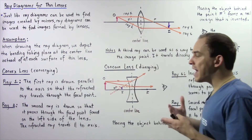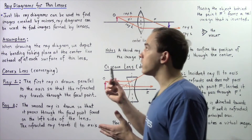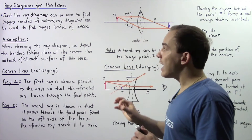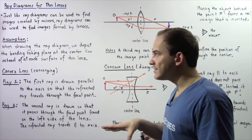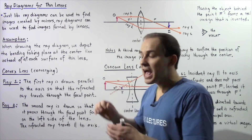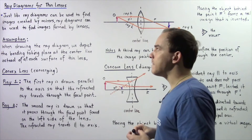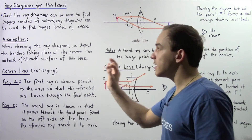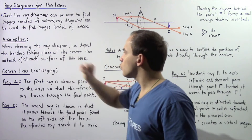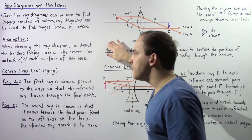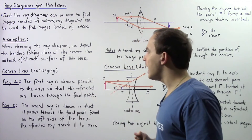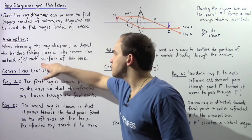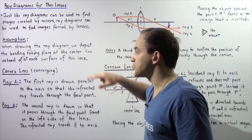Before we describe how to properly draw the ray diagram for thin lenses, we must make the following assumption. Our rays of light for lenses actually bend at two locations — at the front surface of our lens and at the back surface of the lens. But for assumption purposes, whenever drawing the ray diagram, we depict the bending or refracting of light taking place at a center line instead of at each surface of the thin lens.